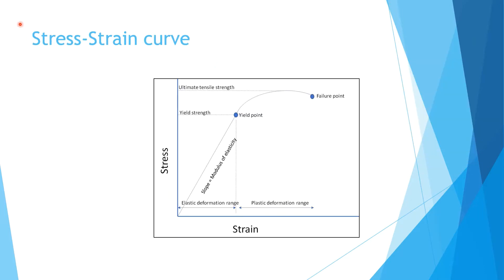Now, the stress-strain curve — this is an extremely important topic that frequently comes up in the exam. You need to understand this curve well to answer questions correctly. It is also important for understanding why we choose different materials for different implants. The slope of the stress-strain curve is the modulus of elasticity. There are two ranges in the curve: elastic deformation and plastic deformation, as well as the yield point and the failure point.